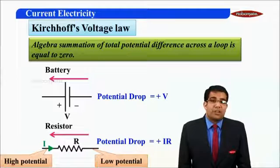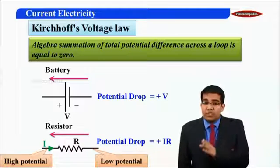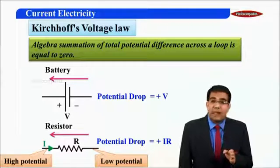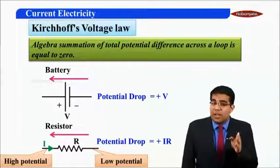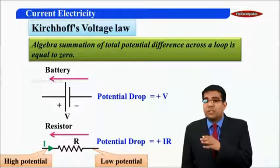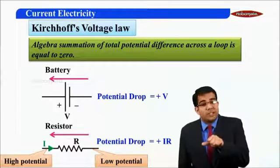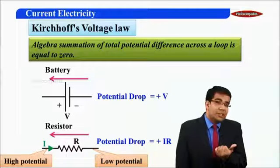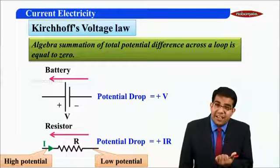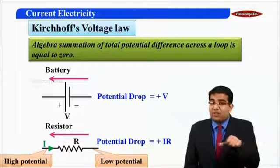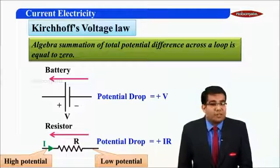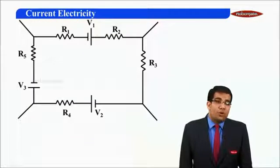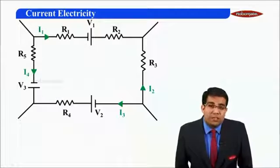The theory is very simple. When moving from the positive terminal of a battery towards the negative terminal, the potential drop is minus V. If moving from negative towards positive, the potential gain is plus V. If moving in the direction of current through a resistor, the potential drop is minus IR. And if moving against the direction of current, the potential gain is plus IR. Now let us apply Kirchhoff's voltage law to a loop as shown.